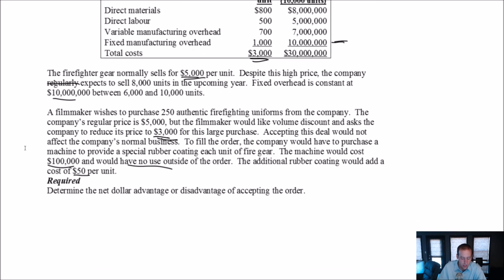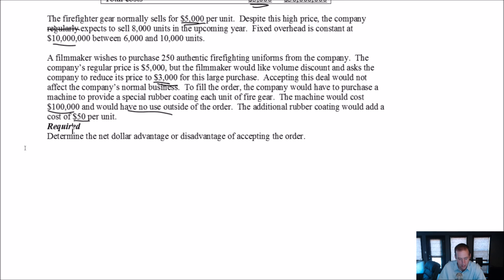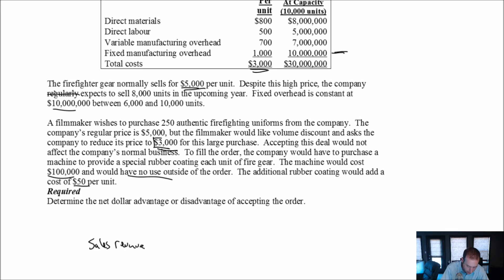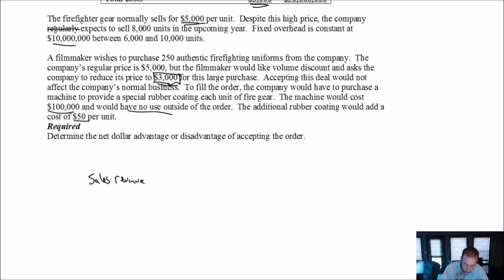The way I like to do this type of problem is to build an income statement for the special order scenario. What's the sales revenue for the order? Our sales revenue per unit, if we accept, is going to be $3,000 — that's what the filmmaker offered us — for 250 units. Three thousand dollars isn't great for us because we would normally want to sell for $5,000. But $750,000 is a total order that would get your attention — if you're running this company, this would get you out of bed. So they're going to seriously consider it even though it's a deep discount.